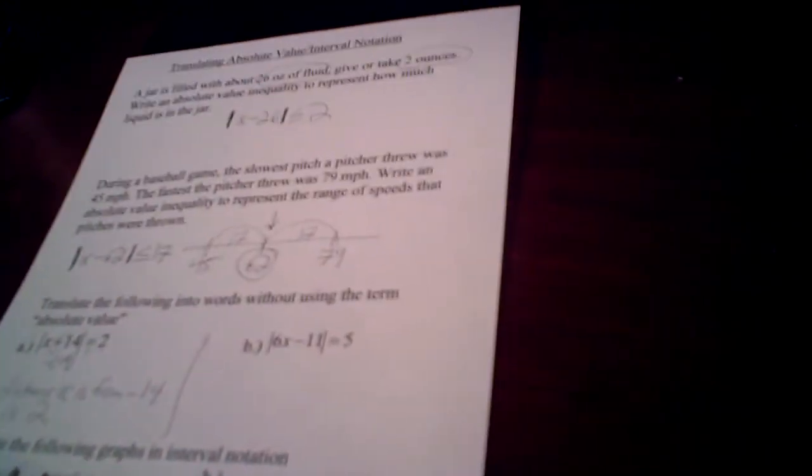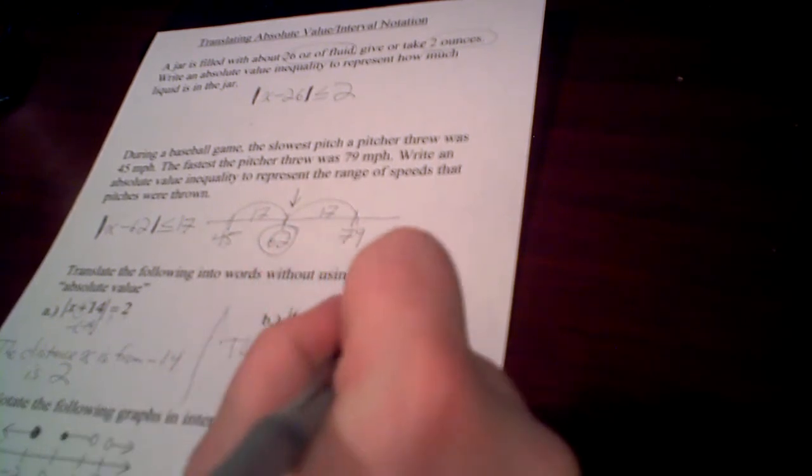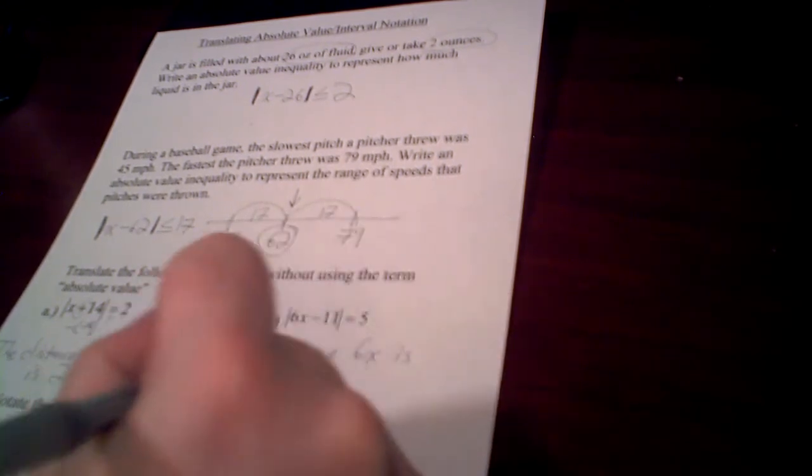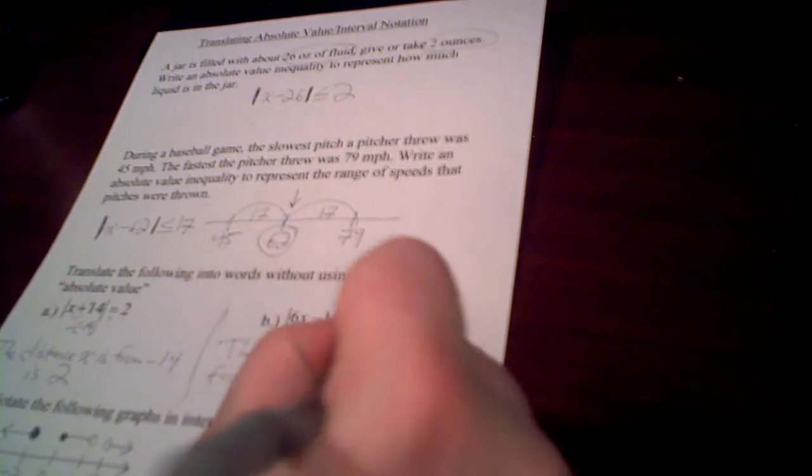Now over here on b, there's already a minus sign, so all you have to say is that the distance that 6x is from 11 is 5.